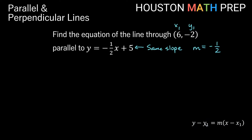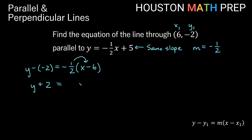So we start with y minus y1 on the left side. That will be y minus negative 2 equals m, which is negative one half that we borrowed from the other equation, times the quantity x minus x1 — so x minus 6. We change minus negative 2 to plus 2, giving us y plus 2 on the left. Distributing the negative one half: we get negative one half times x, and negative one half times negative 6 gives us positive 6 over 2, which simplifies to plus 3. So we have y plus 2 equals negative one half x plus 3.